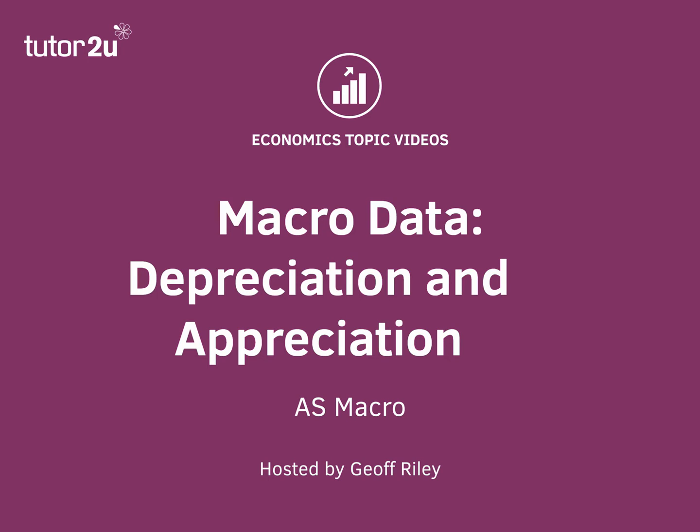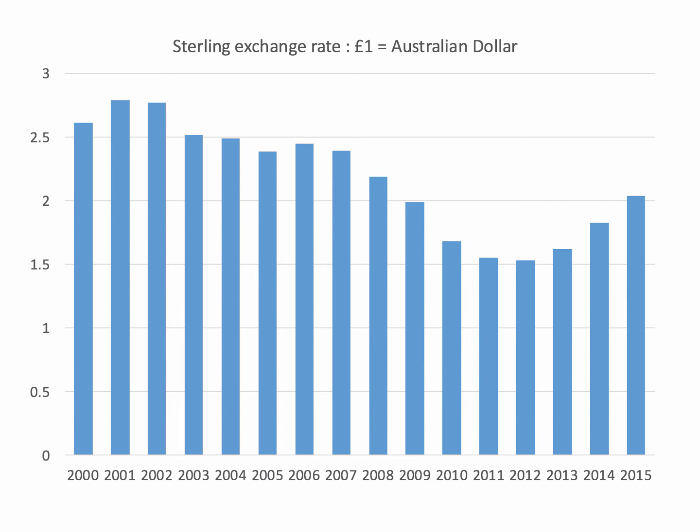Here's a quick video looking at exchange rate data and the ups and downs of the pound against the Australian dollar. It's quite important to be able to describe the data carefully. This is the external value of the pound against the Australian dollar. It's annual average data and you can see that over the last 15 years or so the pound has lost value externally against the Australian dollar.